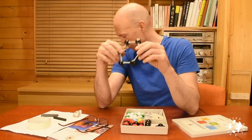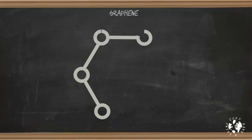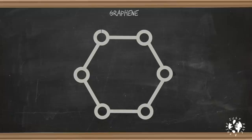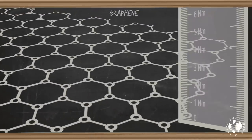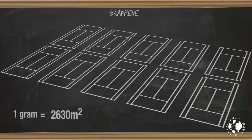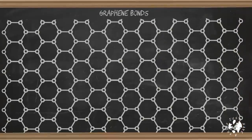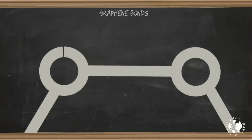All these atoms are joined together in a hexagon lattice that is really only one atom thick — which is 0.35 billionths of a meter, or 0.35 nanometers. A single gram of graphene could cover an area of 2,630 square meters, which is the size of 10 doubles tennis courts. Effectively, graphene is a two-dimensional material, not a three-dimensional material, making it the thinnest substance ever made.